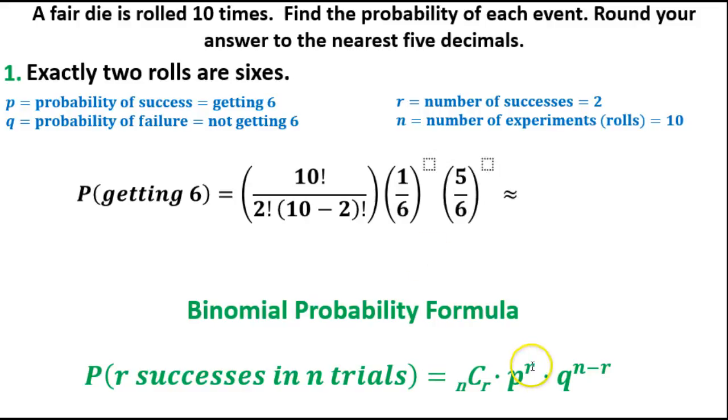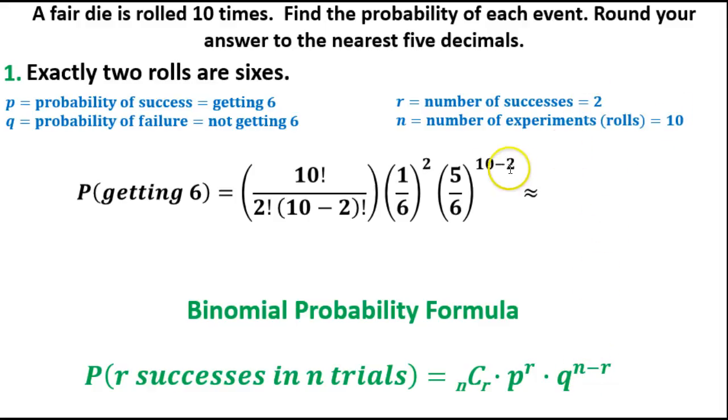Now we can start filling out more information. R, we've already determined is two, so I'm going to fill that in here. That means we're going to have exactly two successes, exactly two rolls of sixes. The other one is N minus R, so N is ten and R is two. Ten minus two gives us eight. This eight comes from having ten total rolls, two are successes, eight are failures.